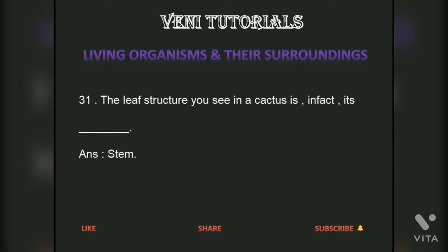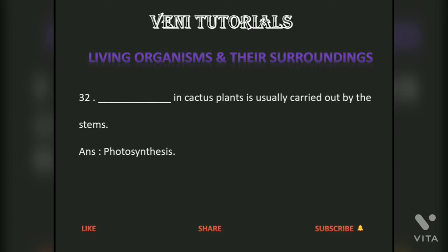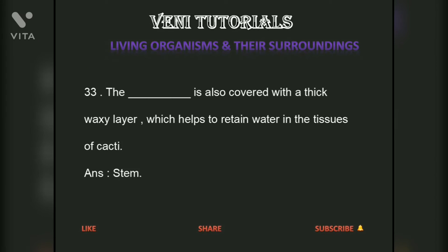The leaf structure you see in a cactus is in fact its stem. Photosynthesis in cactus plants is usually carried out by the stems. The stem is also covered with a thick waxy layer which helps to retain water in the tissues of cacti.